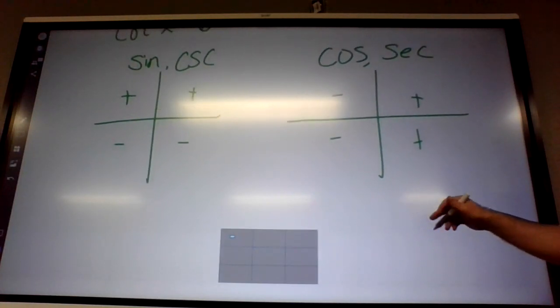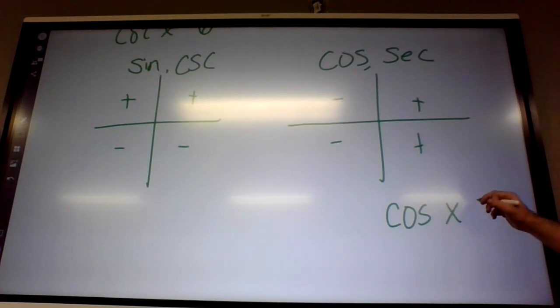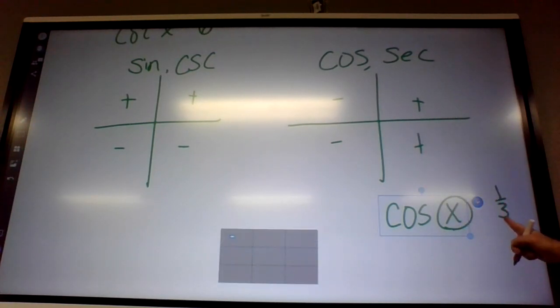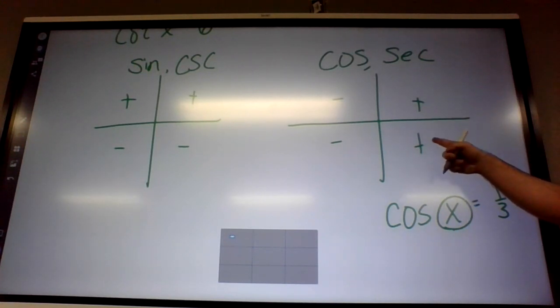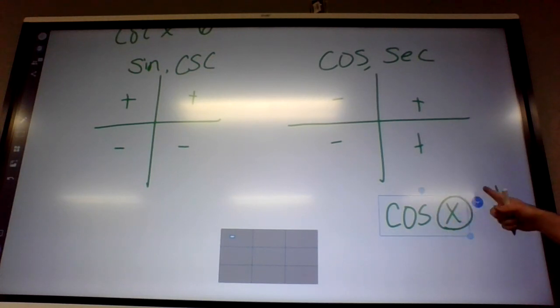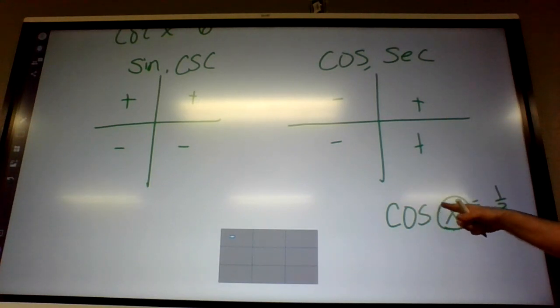Let me clarify a little bit. If you have, like, cosine of x equals one-third, the angle x is going to be either in the, because it's a positive one-third, it's either going to be in the first or the fourth quadrant. If cosine equals something positive, the angle that goes into it is going to be over here somewhere. All right.